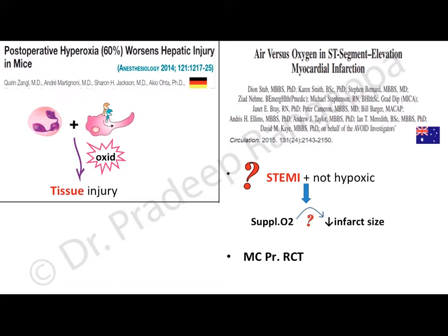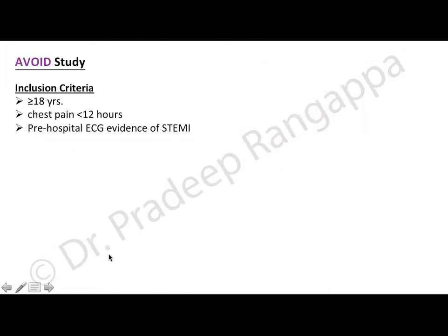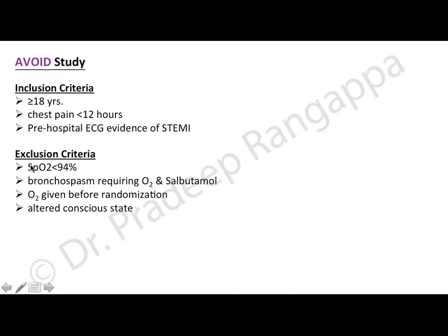Inclusion criteria were patients over 18 years with angina lasting about 12 hours and pre-hospital ECG evidence of ST-elevation MI. Exclusion criteria were patients already hypoxemic, those with bronchospasm requiring oxygen and salbutamol, patients who needed oxygen before randomization, and those in altered conscious states. Of 836 eligible patients with chest pain, 218 were randomized to the oxygen arm and 223 to the no-oxygen arm.